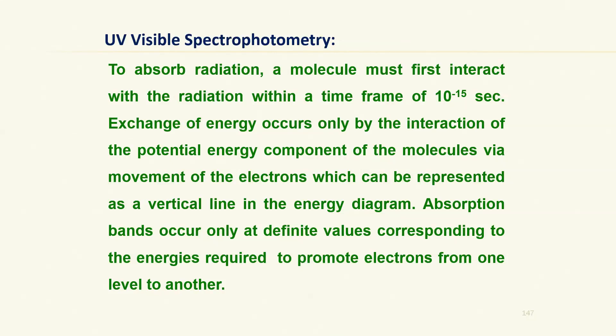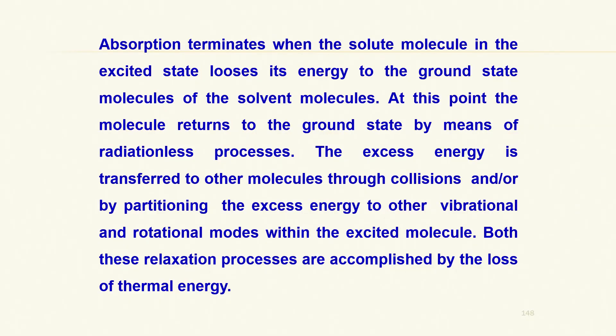Absorption bands occur only at specific wavelength values corresponding to the energy required to promote electrons from one level to another. Absorption terminates when the solute molecule in the excited state loses its energy — an excited electronic state cannot last forever and eventually reverts to the ground state. If energy loss is accompanied by radiation, it is of longer wavelength or lower energy than the incident radiation and is called fluorescence. If there is no emission of radiation, then we have absorption.